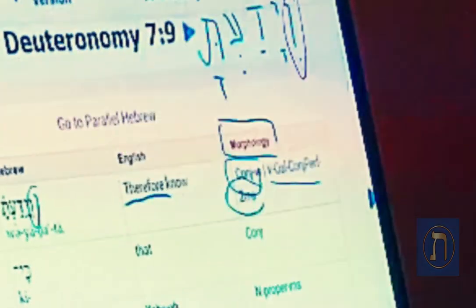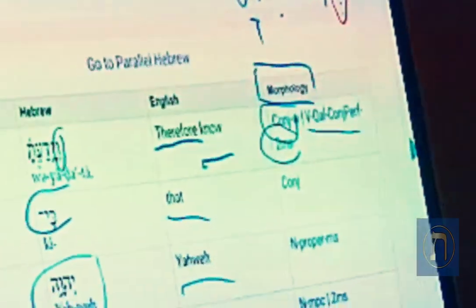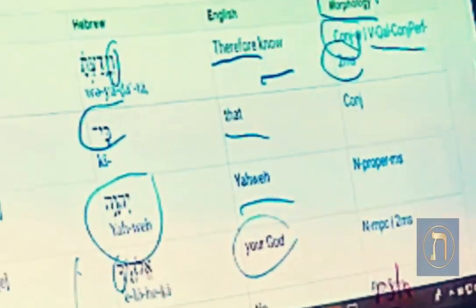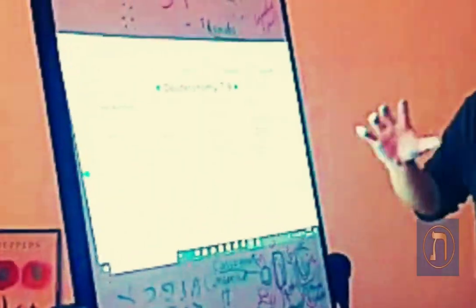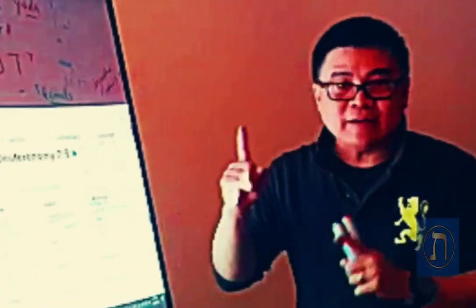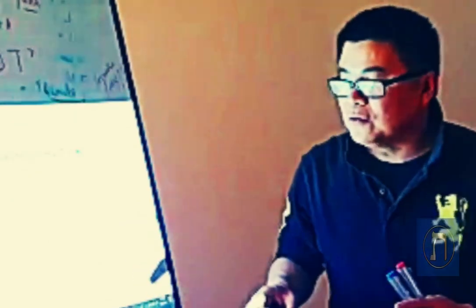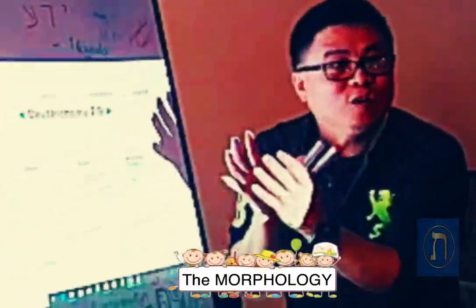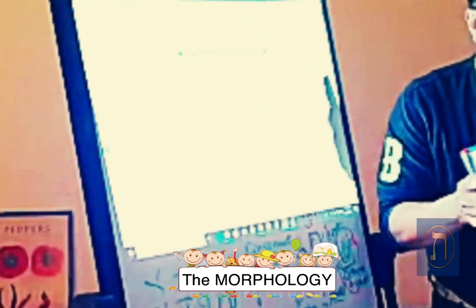So Hebrew, you need to understand first the consonant, the vowel, the Strong's, and lastly you need to understand the morphology. It's like the cake that you eat.